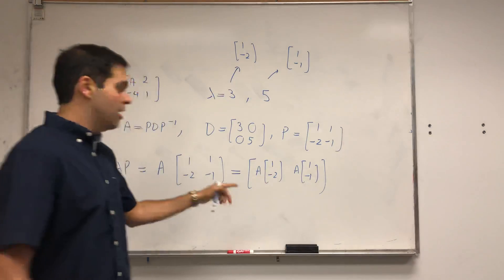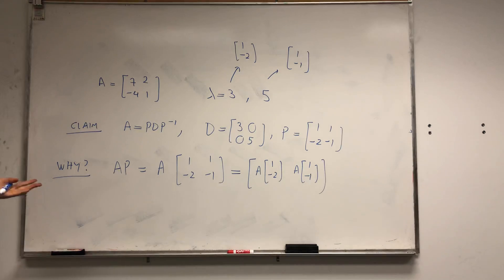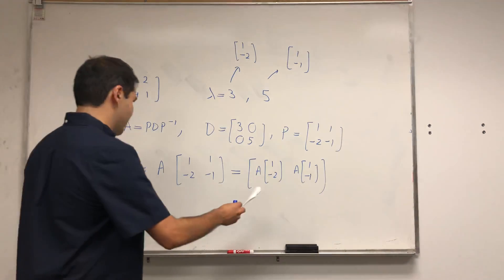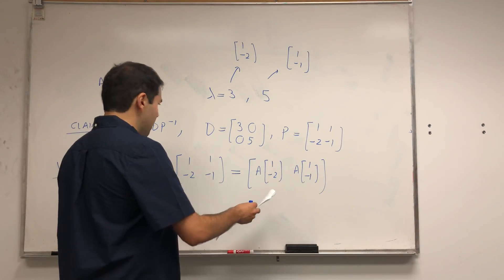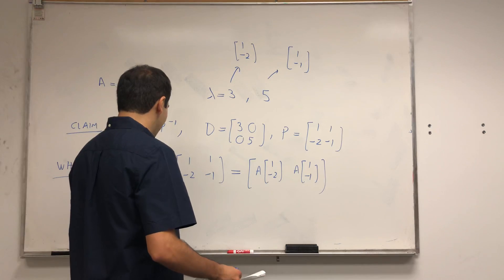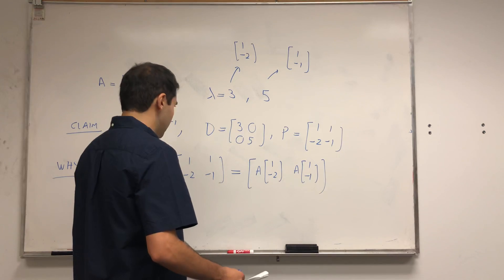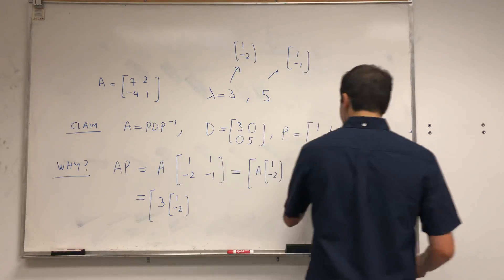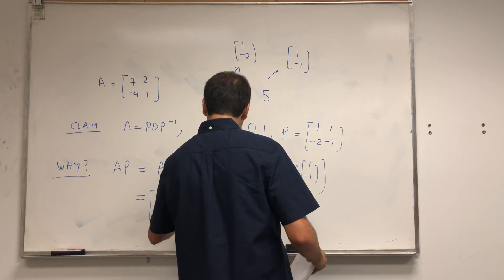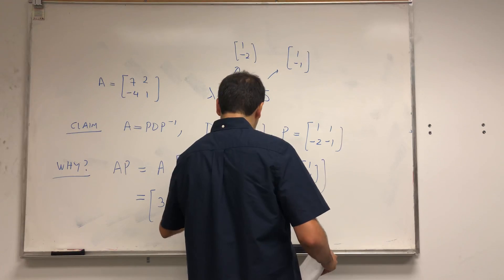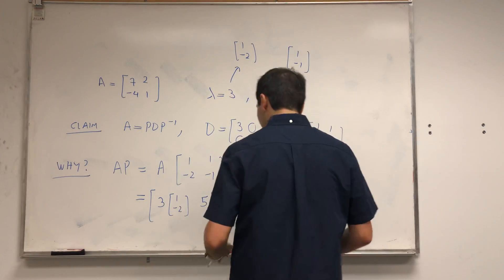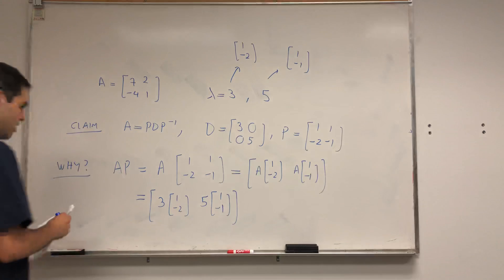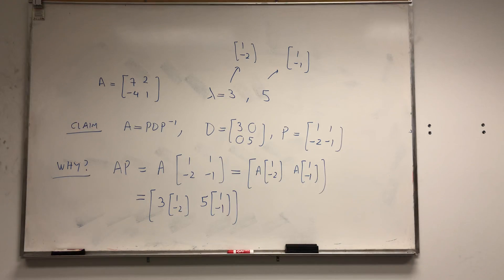But now, by definition of eigenvalue or eigenvector, this just means that A applied to this eigenvector is 3 times the eigenvector. And A applied to [1, -1] is 5 times [1, -1].